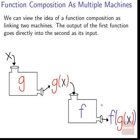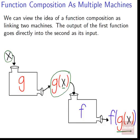The output of the first function goes directly into the second as its input. So our first input goes into g, so it's now g of x, and then we plug all of g of x into f, and so we've got all of g of x being acted upon by f. If we wanted, we could string this up three, four, five, six, seven machines in order. We could compose as many functions as we wanted, but it's easy to start off thinking about it in terms of two functions being composed together.